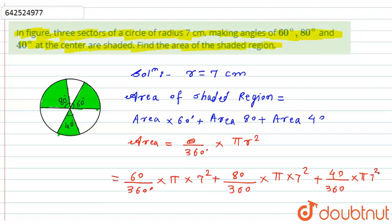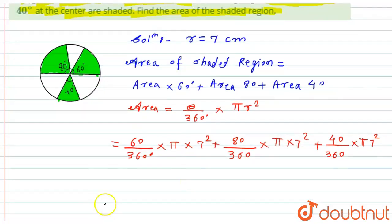Now if you look at the above expression, I can take the common denominator in the bracket. In all these three, 360 is common, so I can take the denominator common as 360, so the numerator will become 60 plus 80 plus 40.